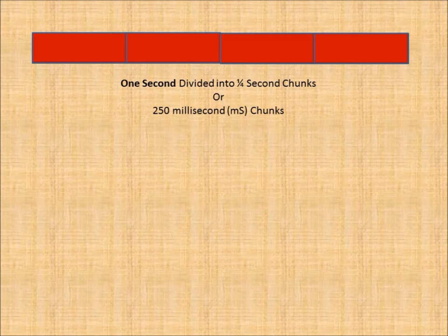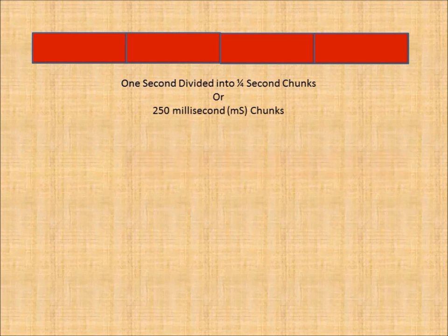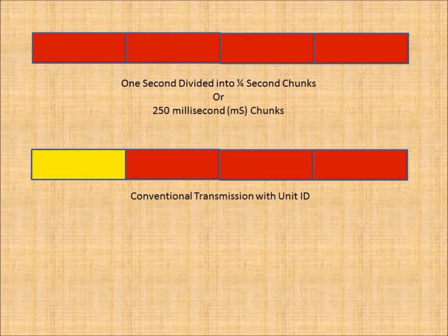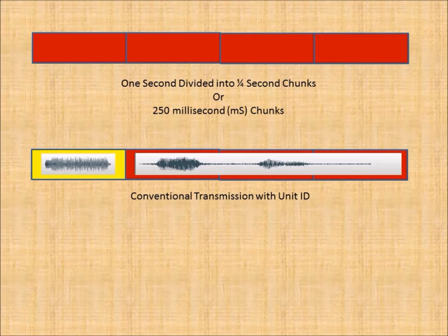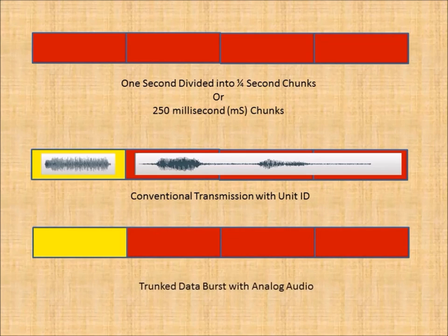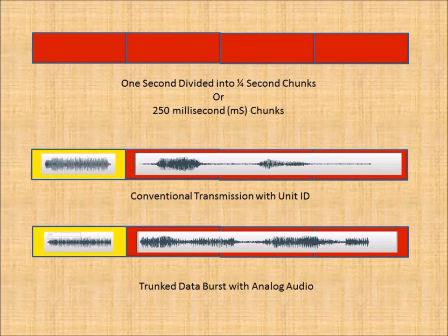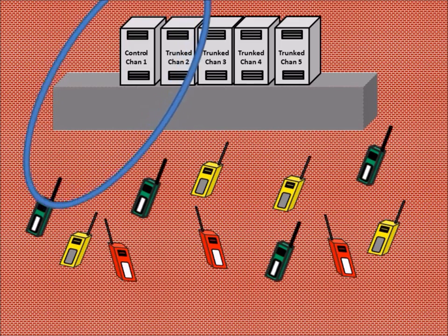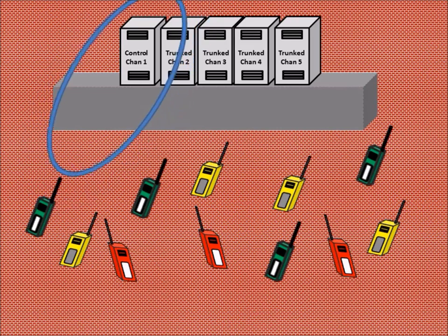The time for initial call setup is about 250 milliseconds, or a quarter of a second. If you operate a conventional system using identifiers at the beginning of transmissions, users may already be familiar with waiting before speaking and should not feel any difference. However, this may take some getting used to by users coming from regular conventional systems with no IDs. Because the control channel is important to the entire operation, systems are designed to have other channels operate as backups, and if the first control channel fails, the system should automatically fail over to the second channel.